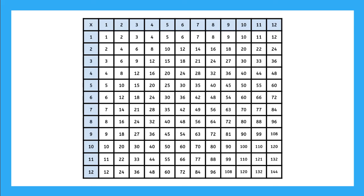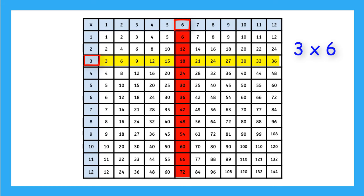We use it like this. Say I need to calculate 3 times 6. I can find 3 on the side and 6 on the top. Where those two lines intersect is the answer: 3 times 6 is 18.